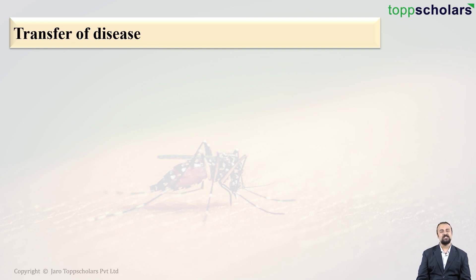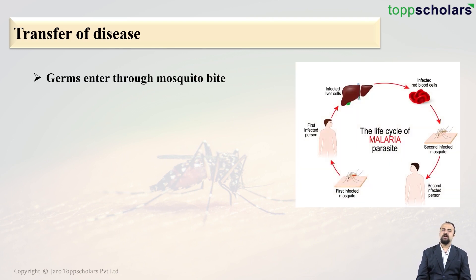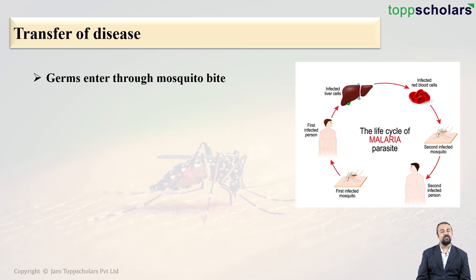Now let us look at how exactly a disease transfers from a mosquito to another person. The germs enter through the mosquito bite. As shown in the diagram, a mosquito that was already infected with the pathogen bites a healthy person, and that person gets infected.